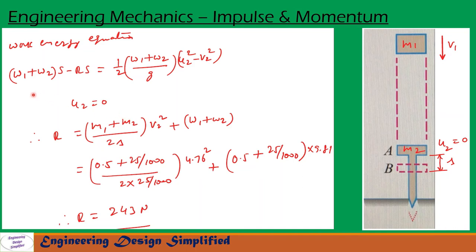So this is the work, and this is the kinetic energy of this mass m1 and m2, that is hammer and nail after impact, while the nail is driven inside the wooden block. So that can be written as (1/2)·(w1 + w2)/g·(u2² - v2²). So u2 is 0 since nail is stationary before impact. So this equation will become r = (m1 + m2)/(2s)·v2² + (w1 + w2).